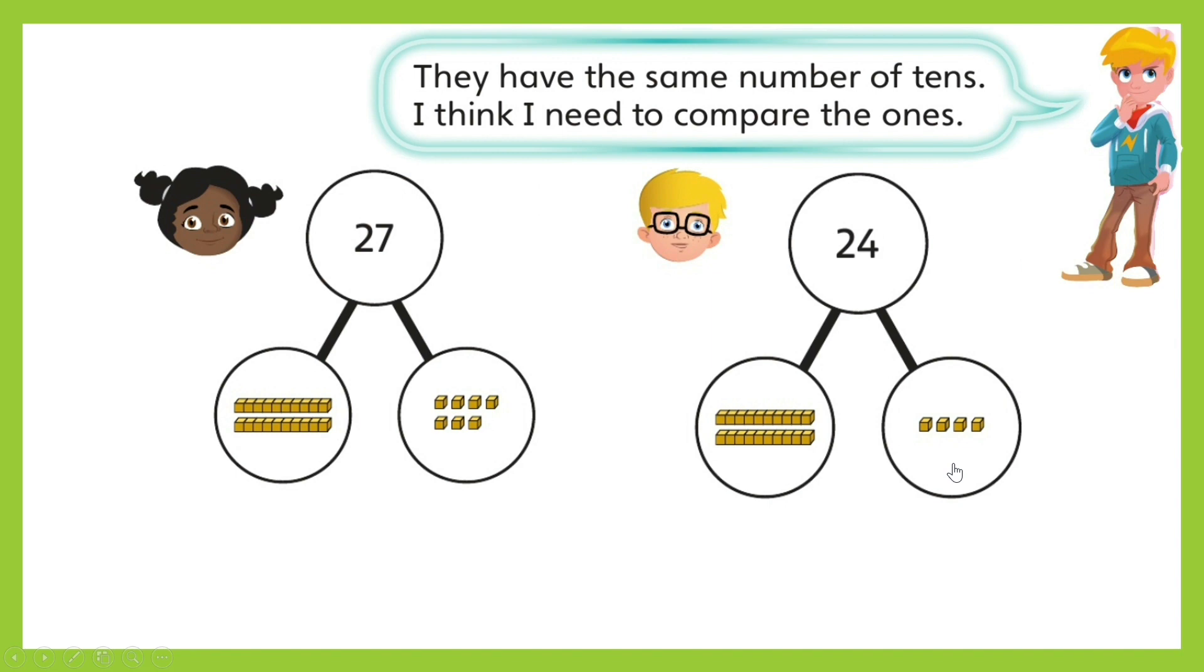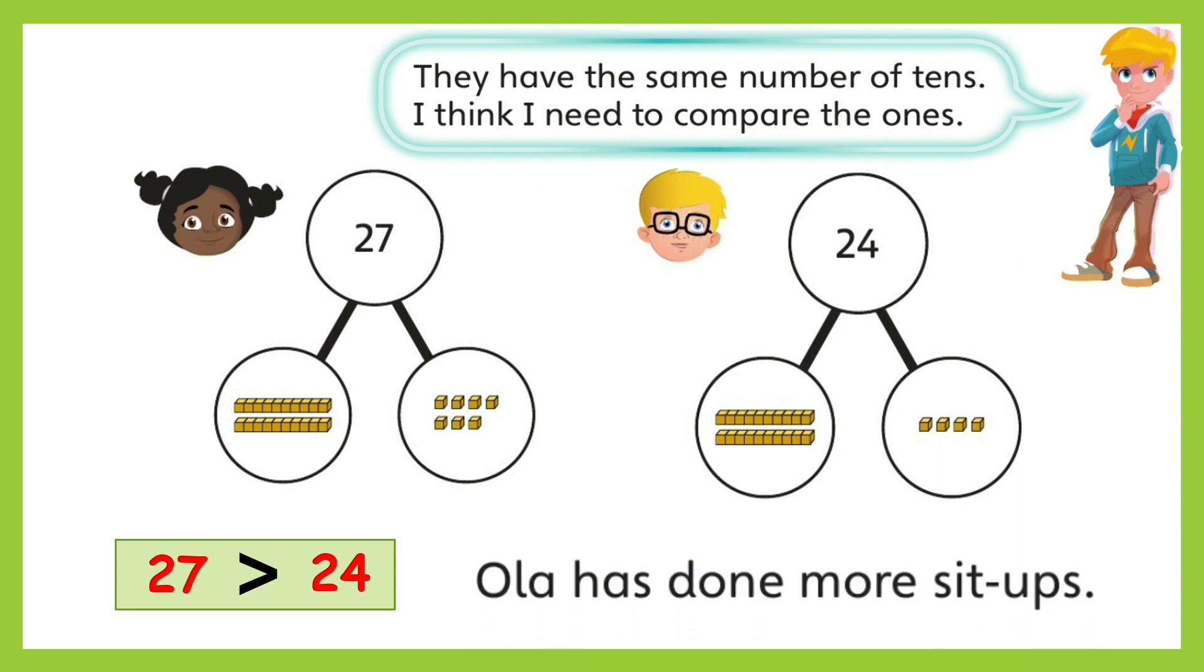Okay, now pause this video and try writing the number sentence comparing 27 and 24. Let's check your number sentence. Since Ola's number has more ones than Ben's number, therefore 27 is greater than 24. Are you also correct? So, who has done more sit-ups? Well done! Ola has done more sit-ups.